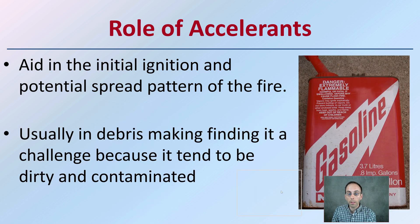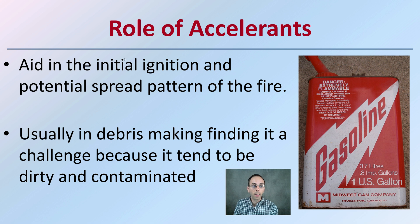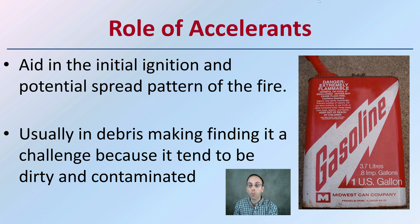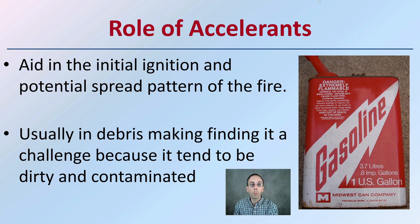Regarding the role of accelerants: keep in mind that these aid in the initial ignition and potential spread pattern of a fire. Finding them in debris is often a challenge because they tend to be dirty or contaminated. For example, gasoline evaporates very quickly, but we could potentially look for evidence of a pour pattern. These accelerants can help determine the initial ignition point or potentially influence the pattern that the fire progresses.